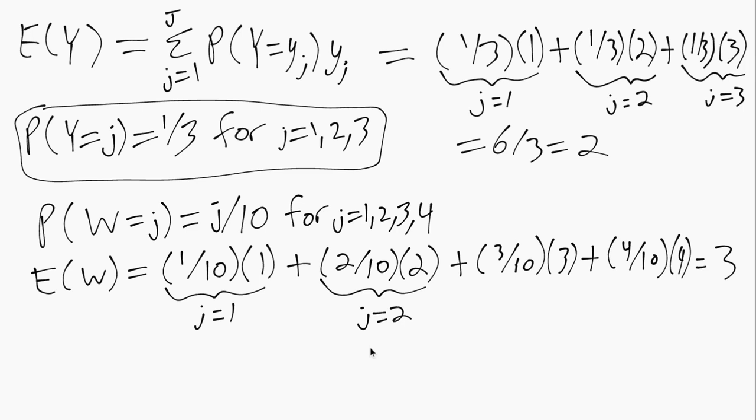We can see if we were to change this. So now instead of W, we have Z where we have the same values, but different probabilities, we'll get a different answer. So for Z, instead of the highest probability on the highest value, it's flipped around to the opposite. Now the lowest value has a 4/10 probability, and then 3/10, 2/10, 1/10.